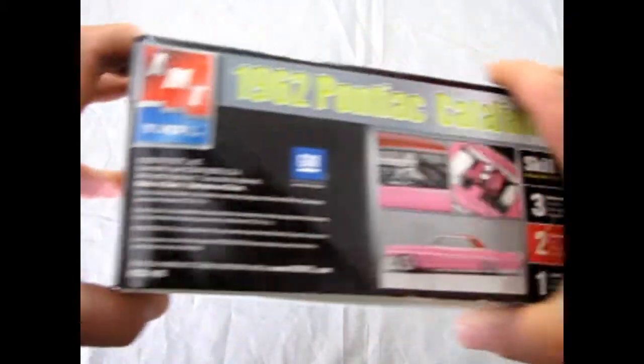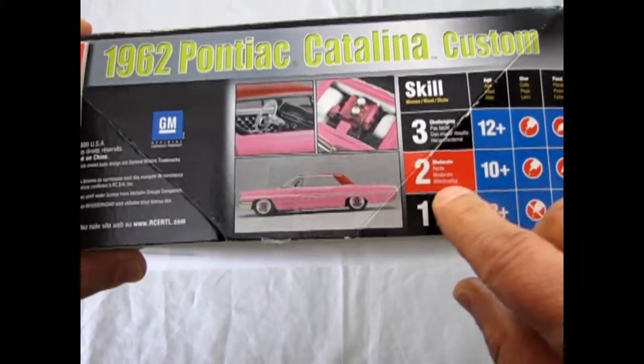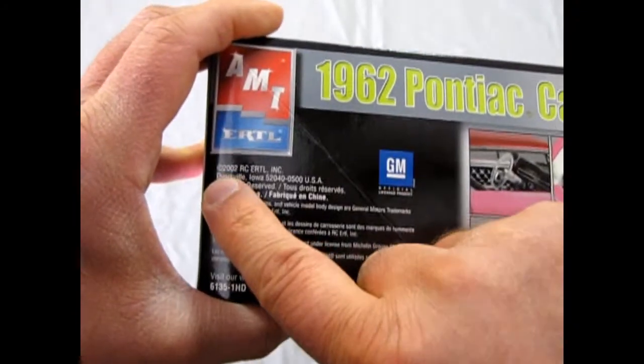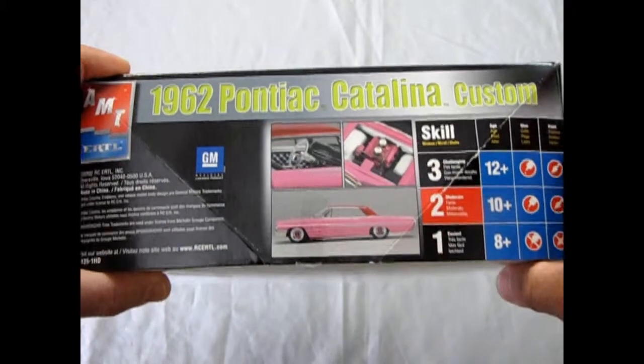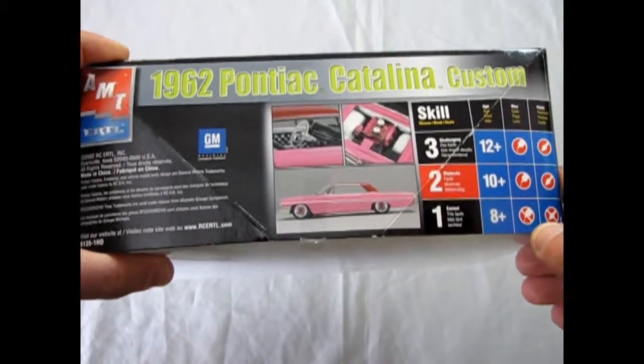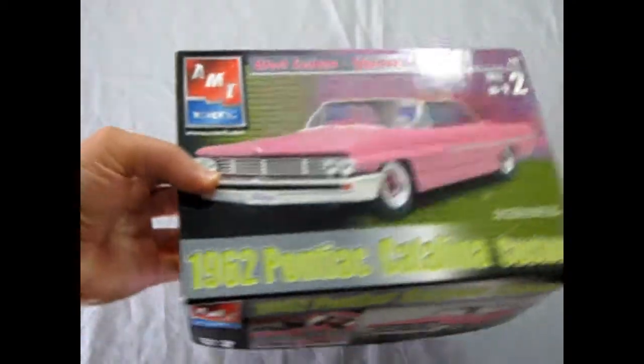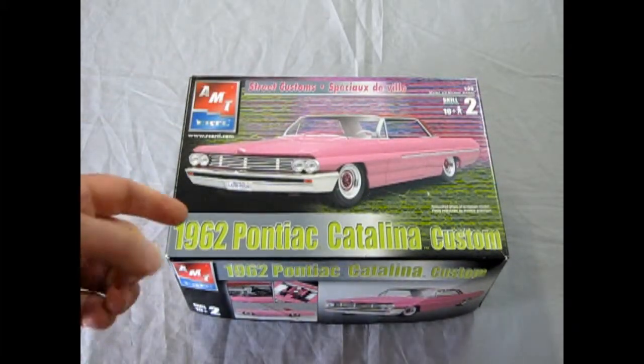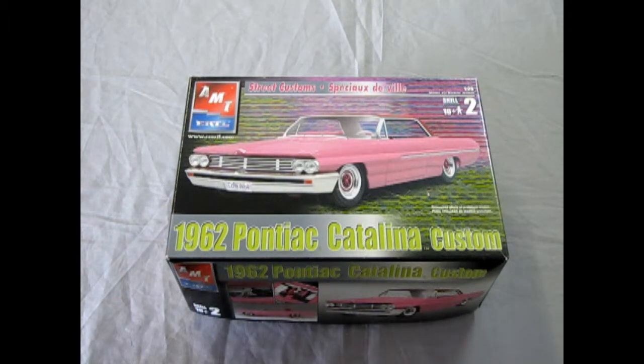So the box, the top and the sides are the same. Now this is a skill level 2 kit for ages 10 and up. Requires glue and paint. Made in 2002 by RC Ertl. But again, sister car to last week's 1962 Pontiac Catalina 421 Super Duty. And I do believe that if you find this kit now, because there has been some re-releases from round two, you will find that it is combined the custom with the Super Duty.